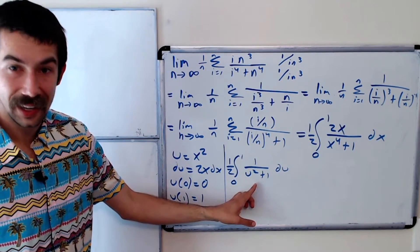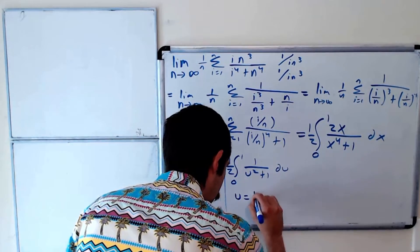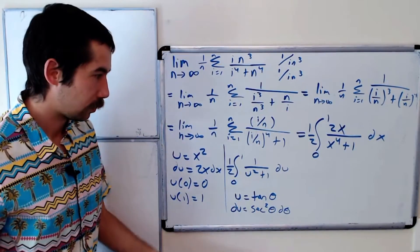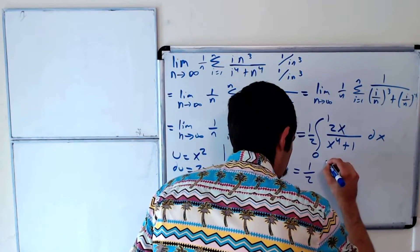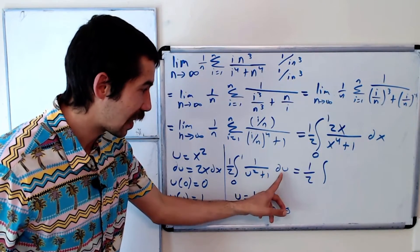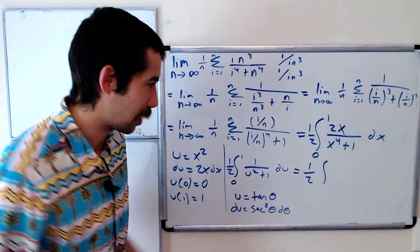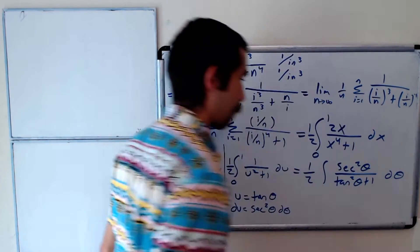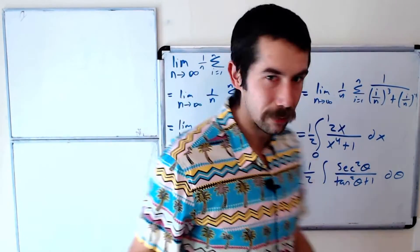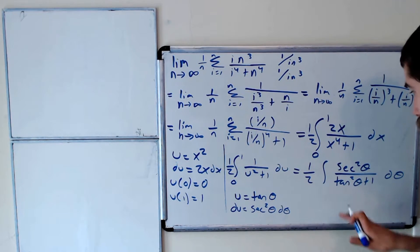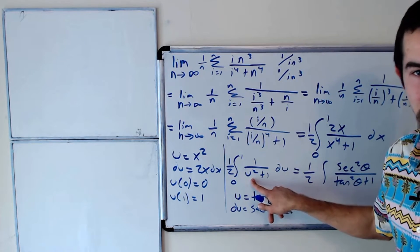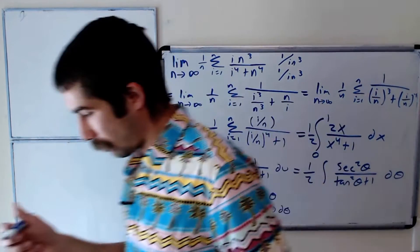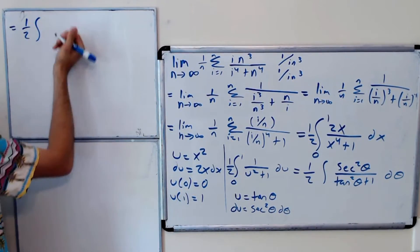So we let u equal tan θ, and du equals sec² θ dθ. The integrand becomes sec² θ over tan² θ plus 1, which is sec² θ over sec² θ. For the denominator, if you have u² plus 1, you use u equals tan θ, because tan² θ plus 1 equals sec² θ. So our integral becomes one-half the integral of dθ.